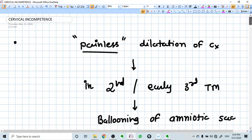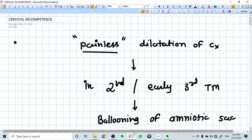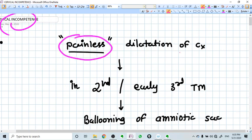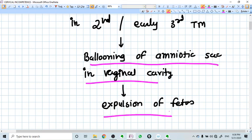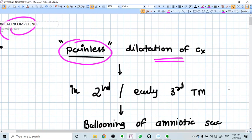Hello everyone, in this video we are going to talk about cervical incompetence. Cervical incompetence is a painless dilatation of the cervix in second trimester or early third trimester, leading to the ballooning of the amniotic sac in the vaginal cavity, followed by expulsion of live fetus.